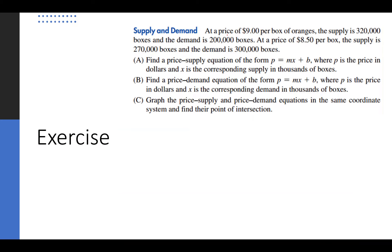Let's look at another example. When the price of oranges is $9, we have a certain supply and demand in the market. The price-supply equation is a linear function with slope m and intercept b, where price p is the y-variable and x is supply in thousands of boxes. The question asks us to plug in the given context to solve for m and b.